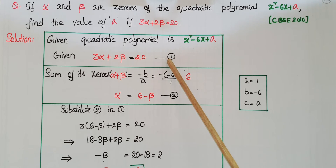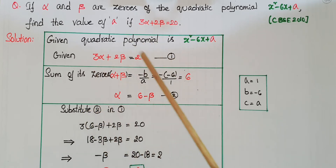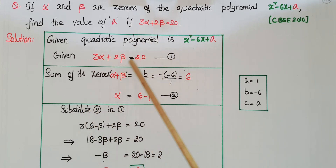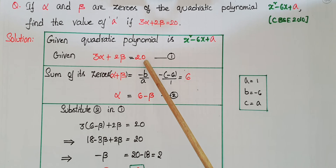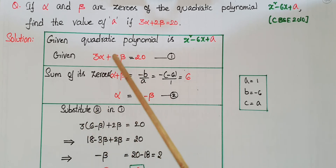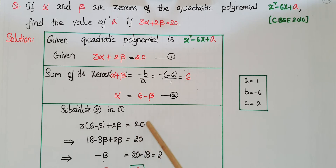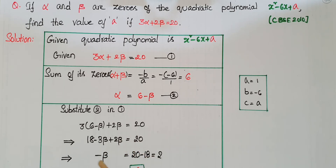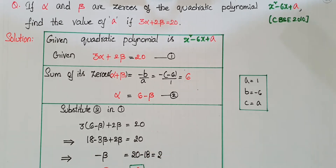This is the first equation. Then substitute equation 2 into equation 1: 3 alpha plus 2 beta is equal to 20, so 3 into (6 minus beta) plus 2 beta is equal to 20. Then 18 minus 3 beta plus 2 beta is equal to 20, so minus beta is equal to 20 minus 18, that is equal to 2.